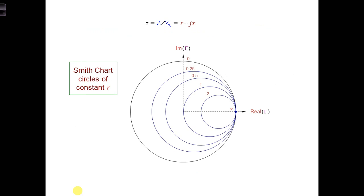To plot lowercase zl, let's look at a few features of the Smith chart. The real part, little r, of the normalized load impedance is represented by circles on the Smith chart, as you can see here.